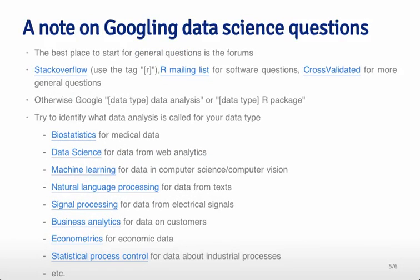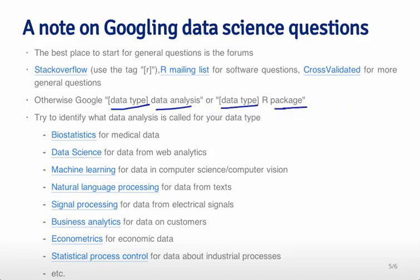Googling data science questions isn't always the easiest thing. The best place to start with a general question is often the forums, where people can direct you to where you should be searching. Keep in mind that Stack Overflow with the tag R is a really good place to get information about R — you have to use this tag because just using the letter R is hard to search for. When Googling, I usually type the data type and then the R package, which often works better than typing the data type and data analysis.